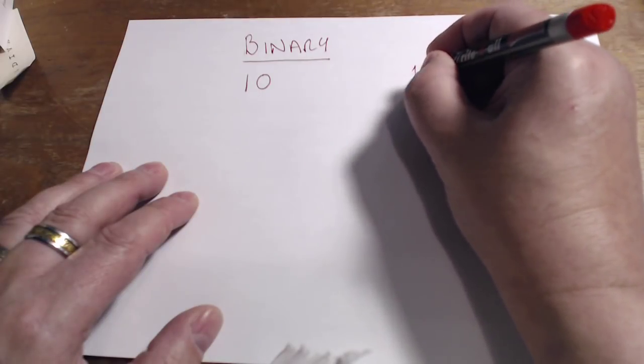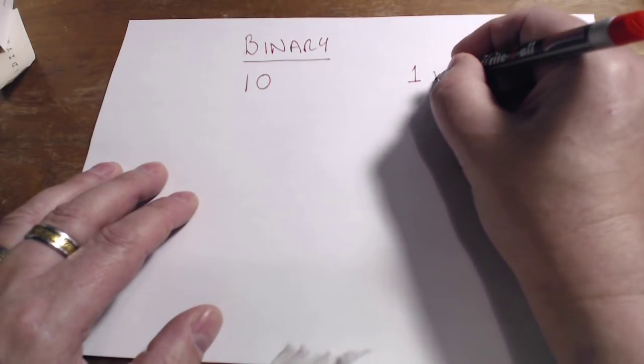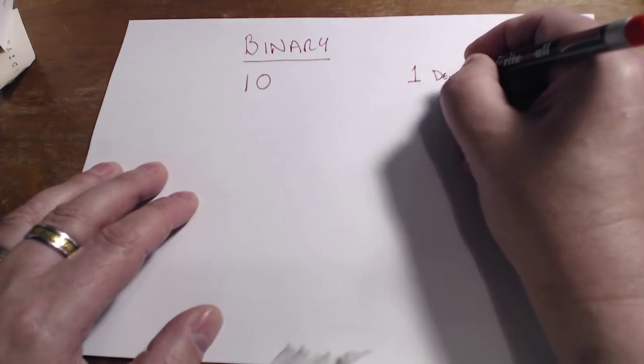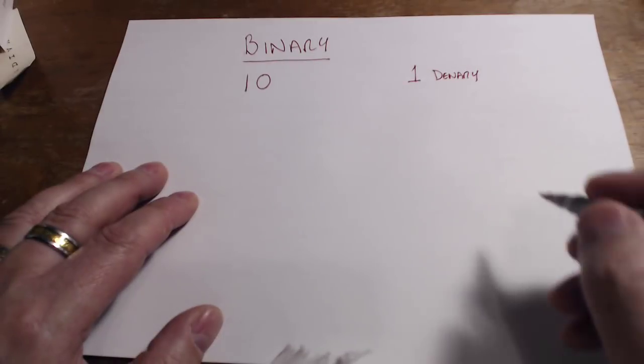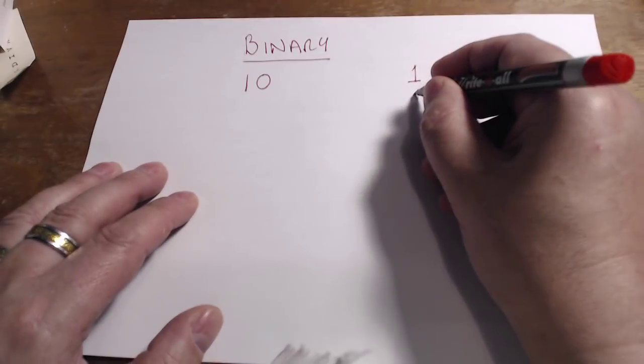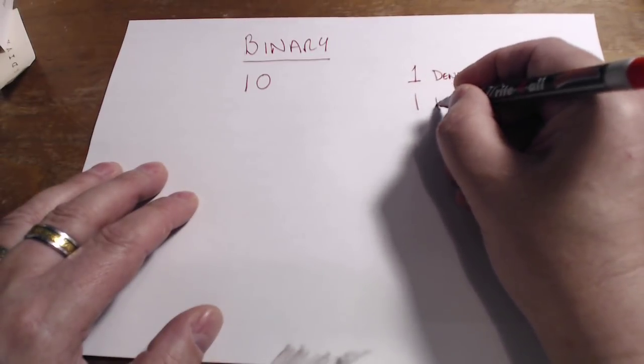In our number system, which is often referred to in computer science as denary, the value one has the value one, and in binary it's the same.